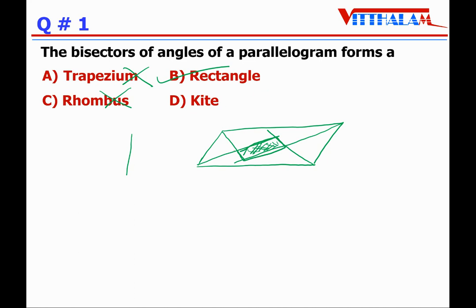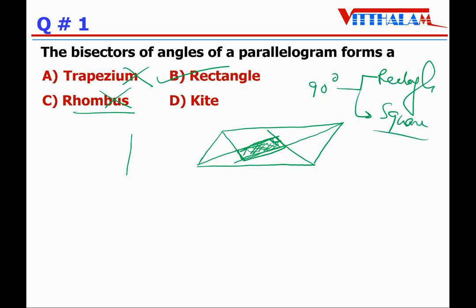Because when the bisectors of angles meet, the interior angle of the figure formed is 90 degrees. For a rhombus it is not 90 degrees. So it will form either a rectangle or maybe a square. Here the option is rectangle; square is not given, so square is not the answer. Kite cannot be, rhombus cannot be. So the answer is B, rectangle.